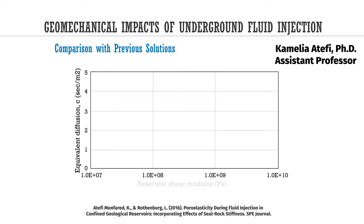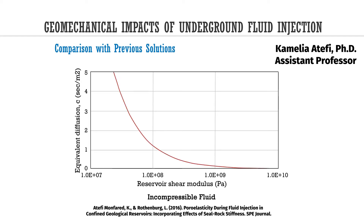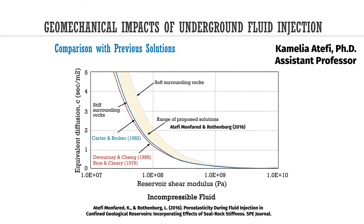Under stiffer seal rocks, or a lower constant, pore pressures generate at a higher rate, specifically in formations with low elastic moduli. This illustrates the significance of vertical confinement effects in reservoirs with lower moduli.